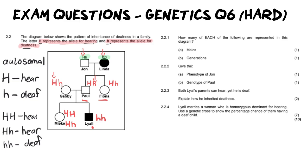First of all, number one, it says how many of each of the following are represented in this diagram? So first thing first, how many are males? Now this is important to know what the circles and squares mean. You cannot just rely on names. Please know that squares are always males. And so that means we've got three males in this diagram. Then it asks you how many generations there are. Well, there are three generations. We've got one generation, two generation and our third generation.